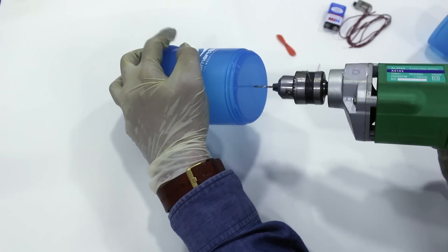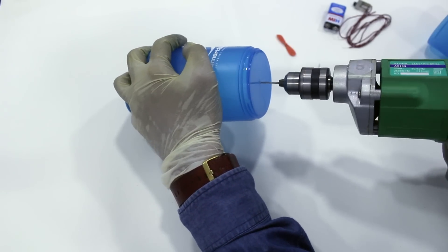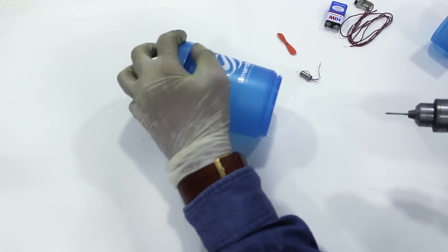Using a drill machine, we drill a hole on the bottom of the shaker for motor installation.